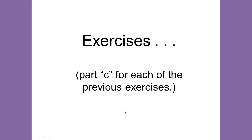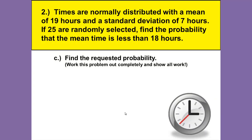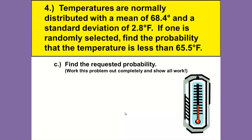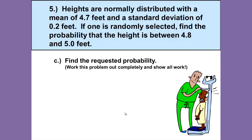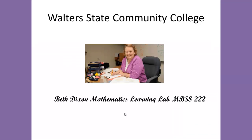There are some exercises for you to try — the same exercises from Part 1, but now you're ready to complete the Part C section, which is to find the requested probabilities. I appreciate you watching and I hope this video was helpful in learning how to apply the central limit theorem and the sampling distribution.